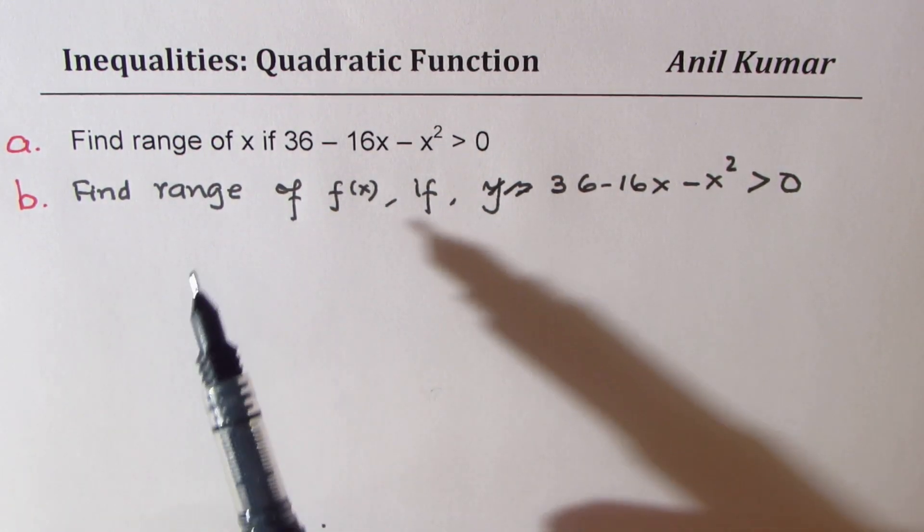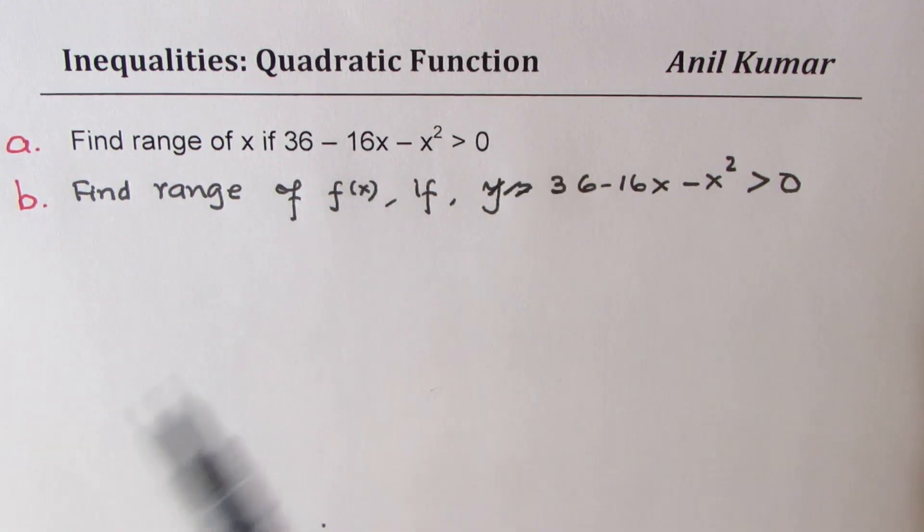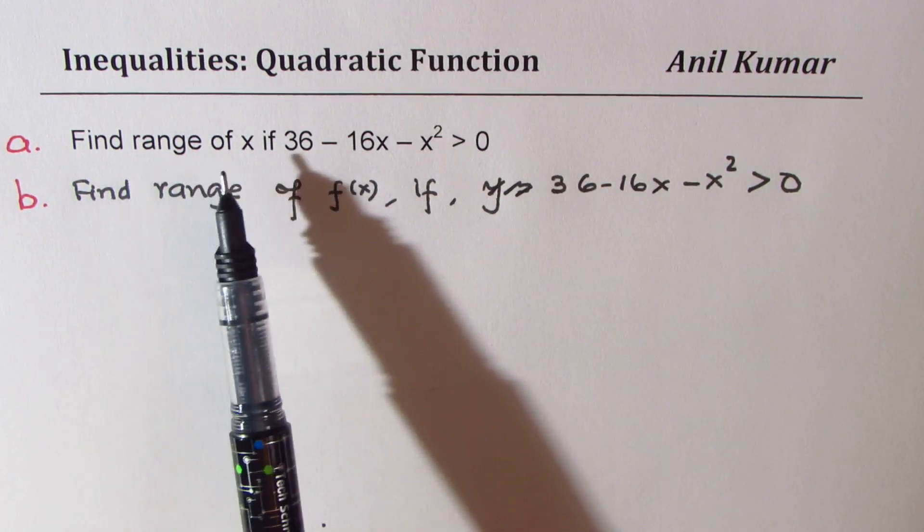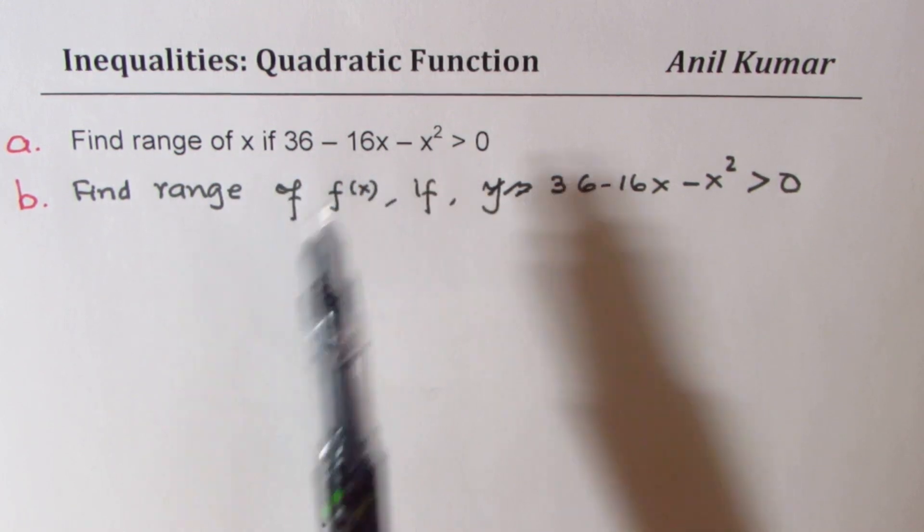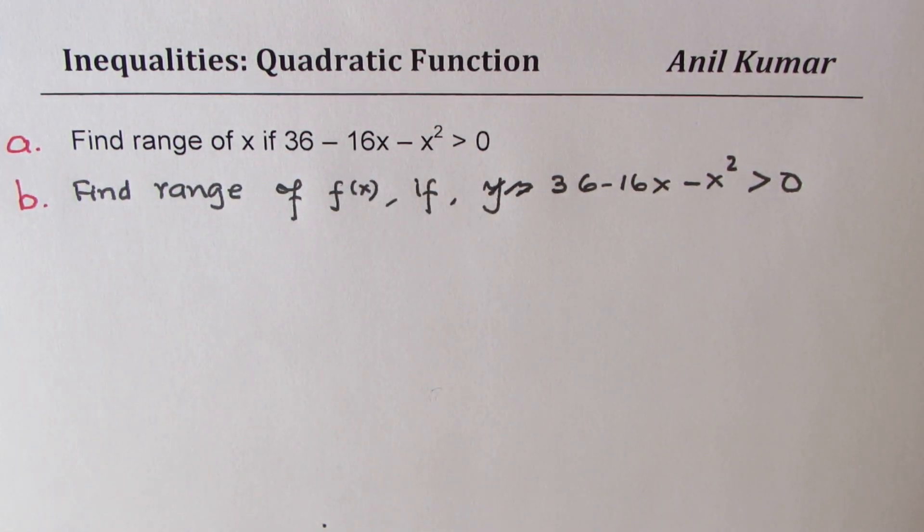Normally we use range for the y values but range of x is also correct, which means possible values of x. So both are correct. But anyway, let me add this dimension to it. We'll find range of the function itself for the inequality to be true. So I hope the concept is clear.